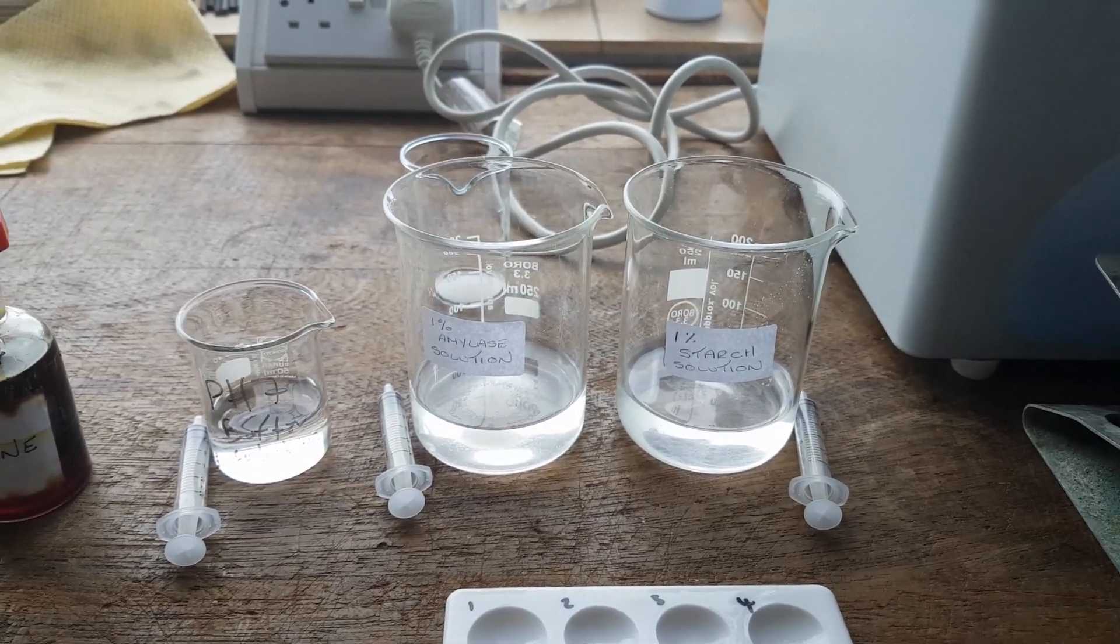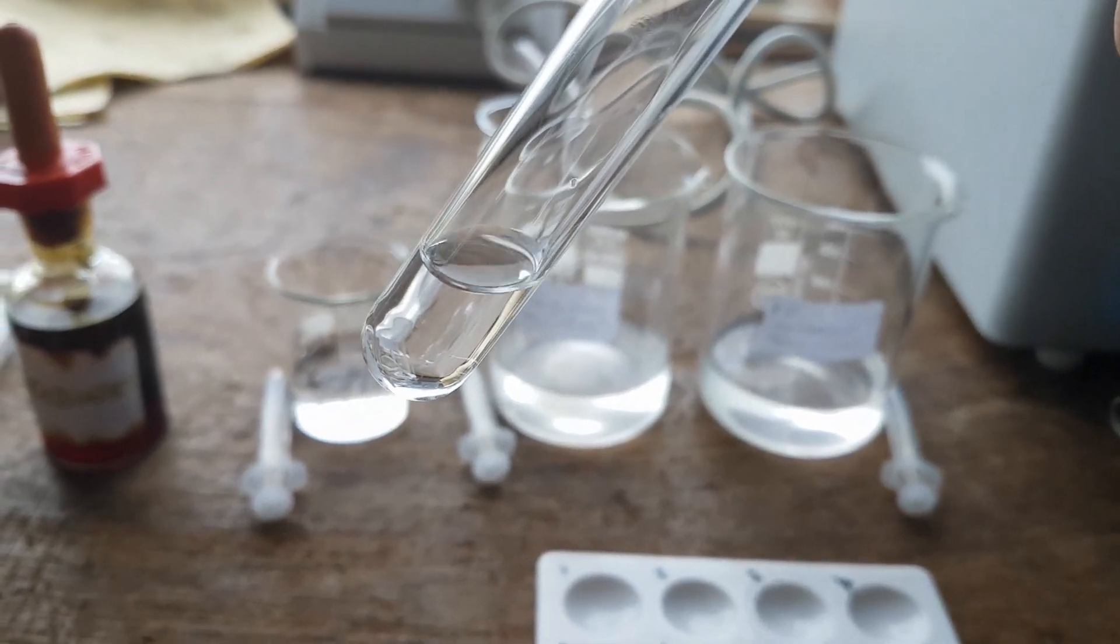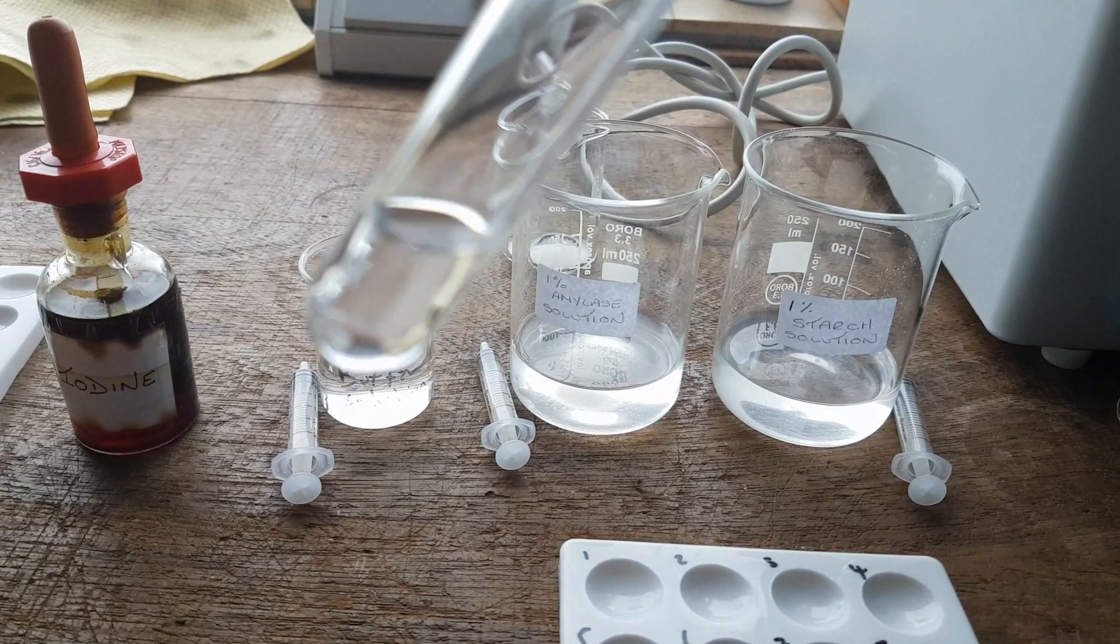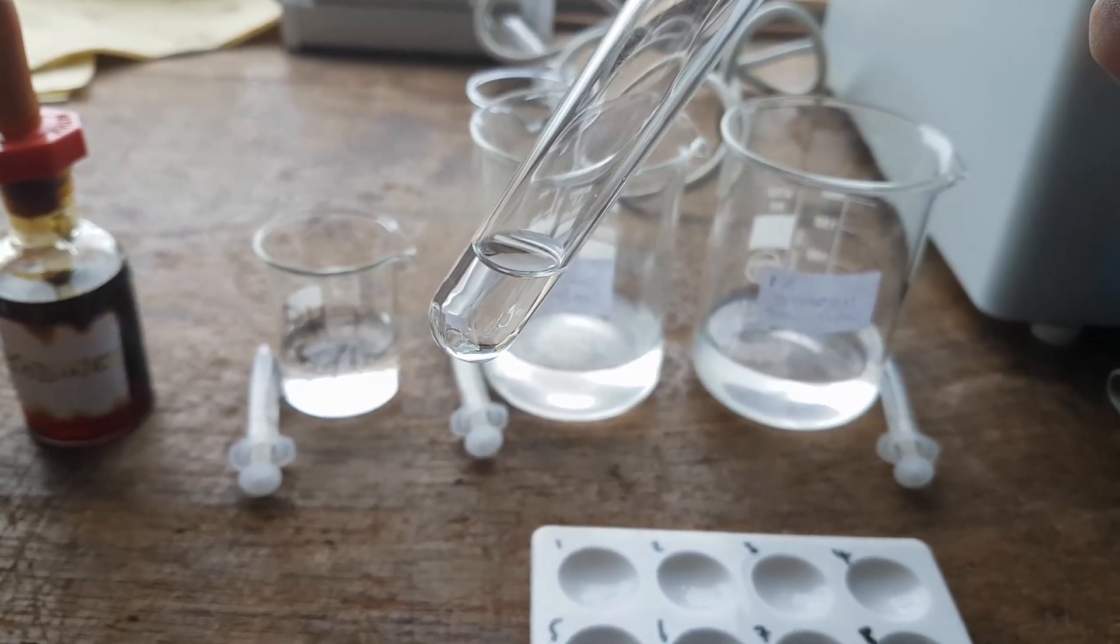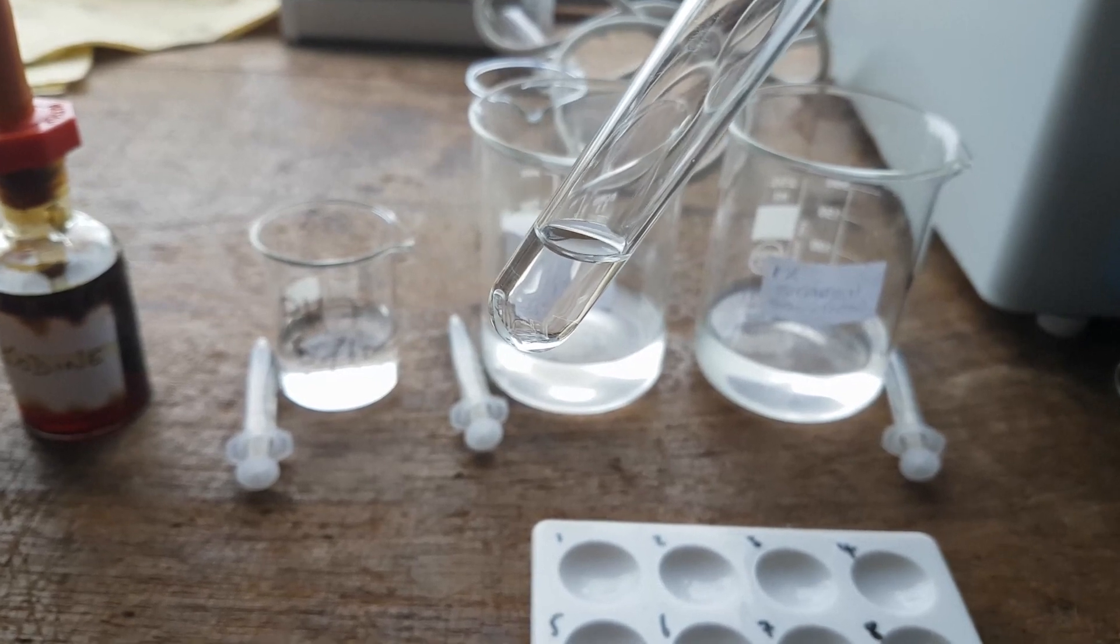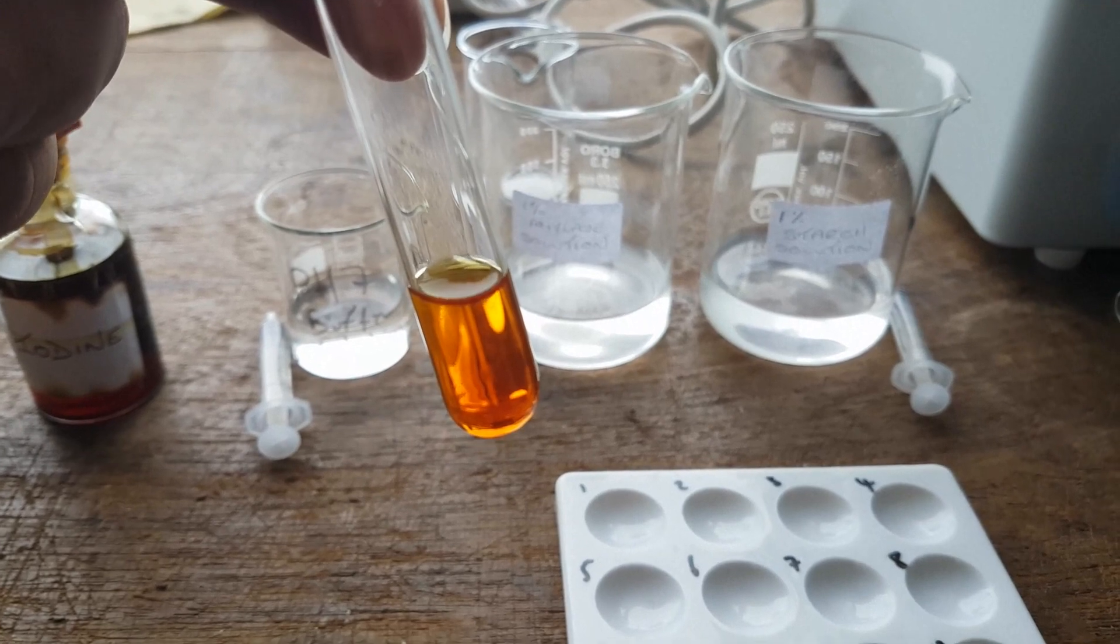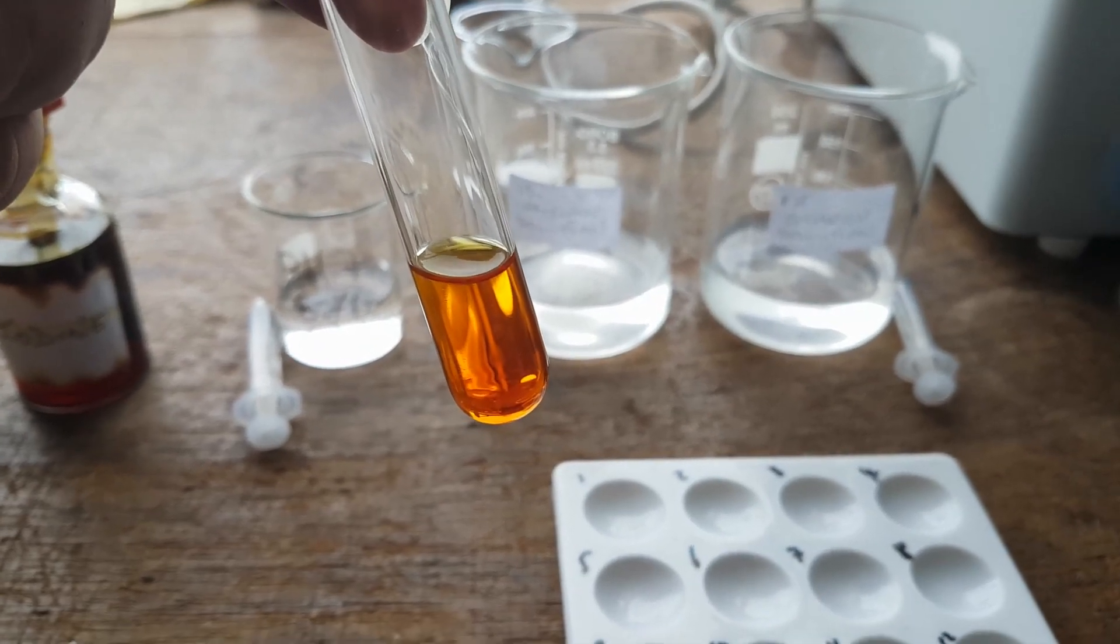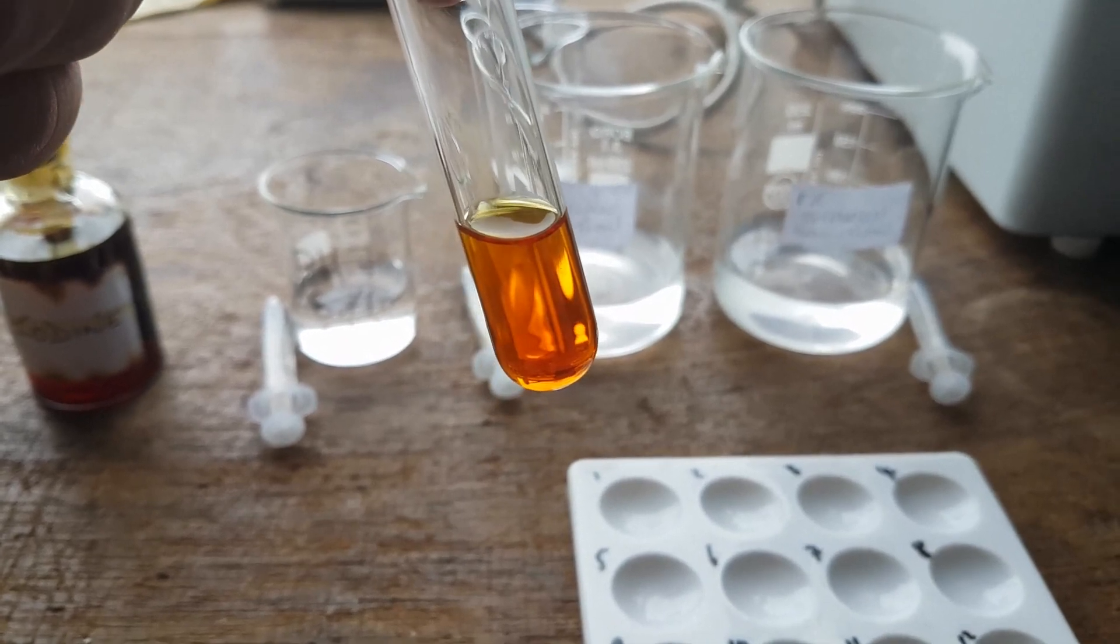Now as you can remember, a negative result, we fill up a test tube with water and then add our iodine to it. There should be no color change because of course, water does not contain starch. I'll show you that now. So I've just added the iodine in and the iodine is an orange-brown color. There's no change to iodine. This shows a negative result for starch.